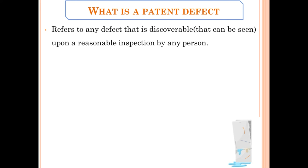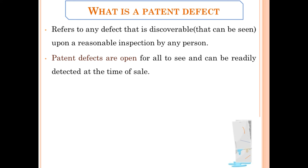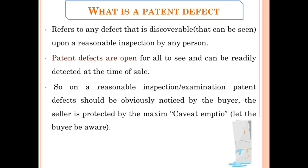What is a patent defect? A patent defect refers to any defect that can be seen upon a reasonable inspection by any person during a sale. Patent defects are open for all to see and can be readily detected at the time of sale. The seller is protected by the maxim caveat emptor — let the buyer beware.